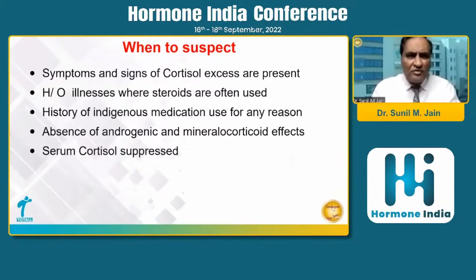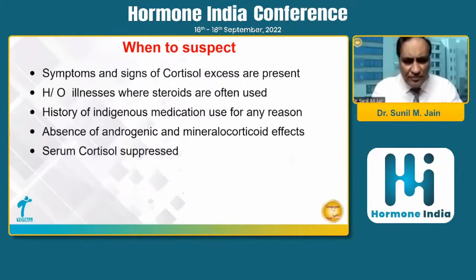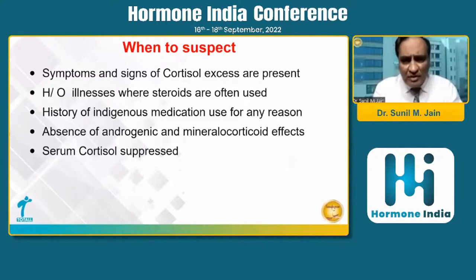Many times patients are suffering from illnesses where steroids are often used, like vitiligo, rheumatoid arthritis, myopathy, etc. If it is an obvious case where we know the patient is receiving steroid therapy and is cushingoid, there is no issue in diagnosis. But when we are not aware, we have to go into depth and inquire about the history of indigenous medication, which is very common in our practice.